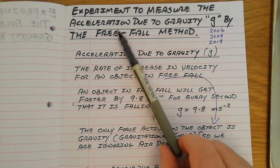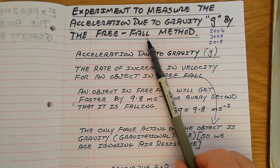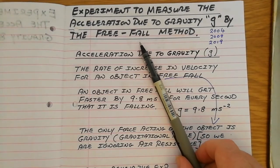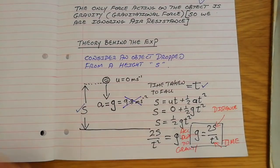Now, we've already done some work on the experiment to measure the acceleration due to gravity by the free fall method. And the first thing we did when we approached this topic was to derive this formula here.